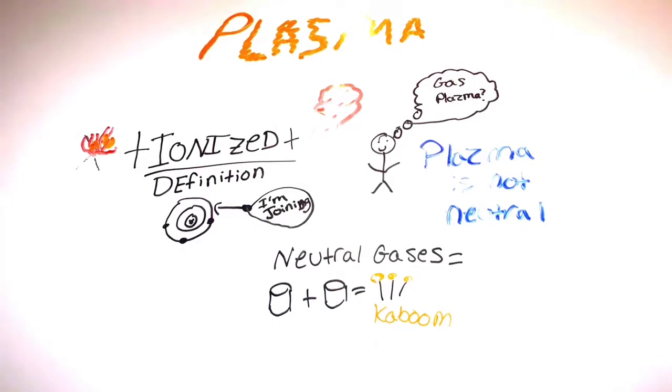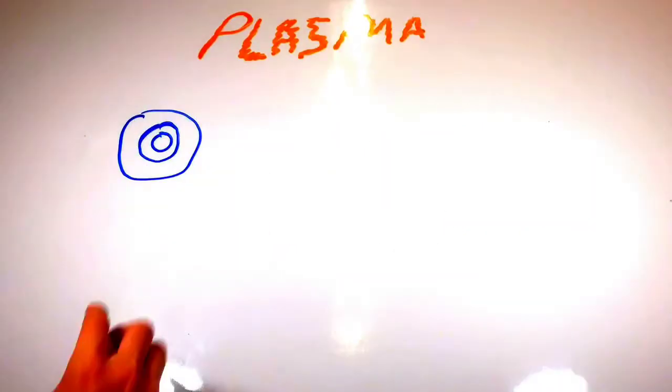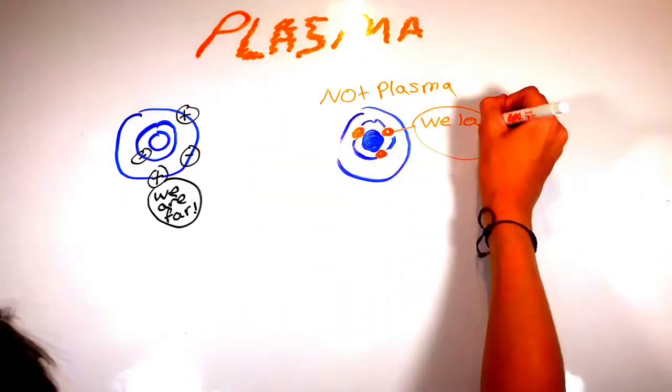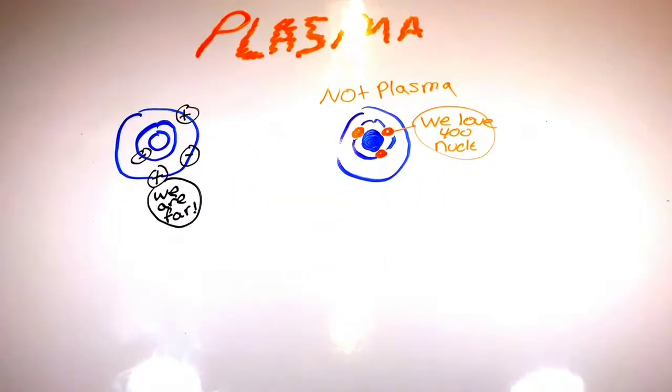Also, another difference is that plasma has electrons that are positive and negative, so electrons are farther away from the nucleus, whereas a regular gas, such as neon for example, all electrons are bound to it.